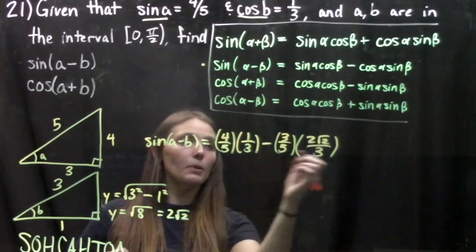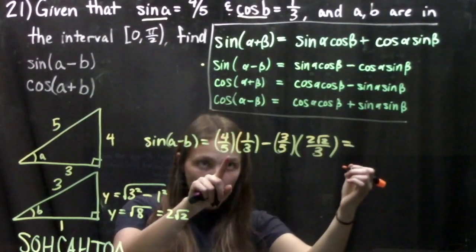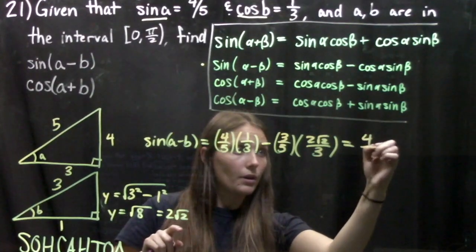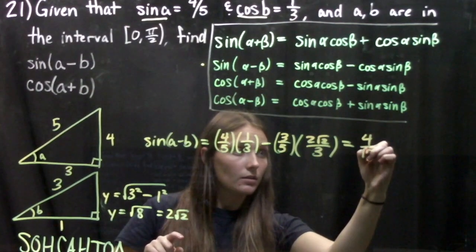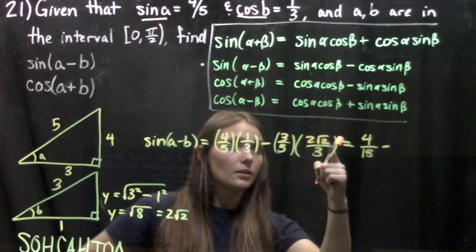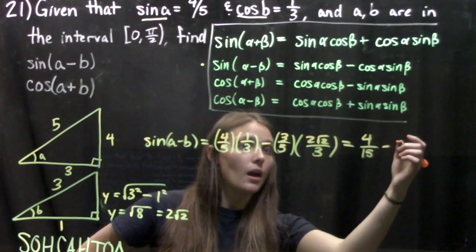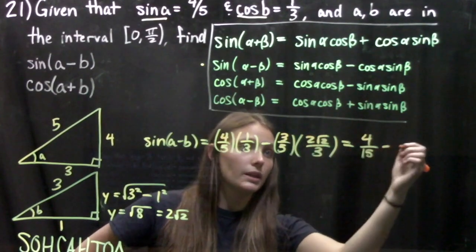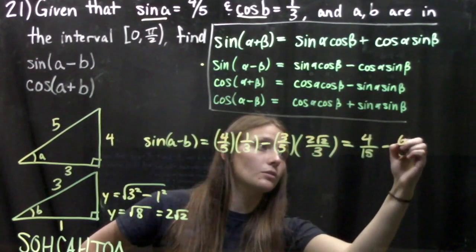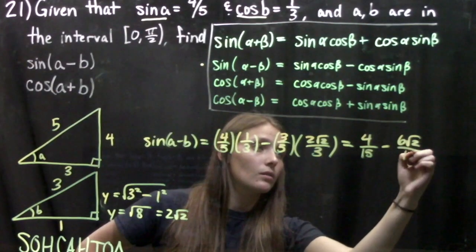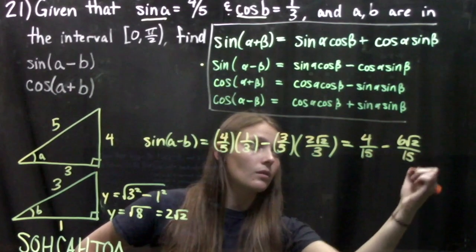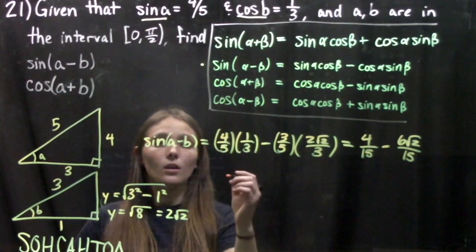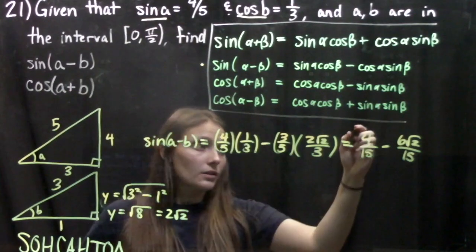When we simplify, we get 4/15 minus 6√2 over 15. So that's our answer for sine of A minus B.